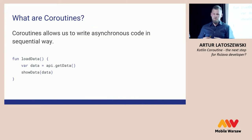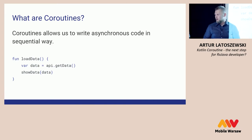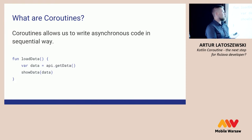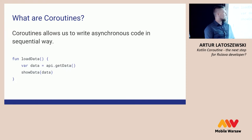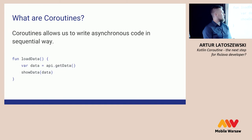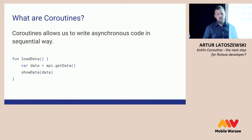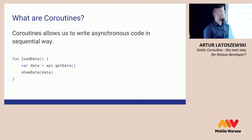Let's start by saying what coroutines are. Coroutines allow us to write asynchronous code in a sequential way — sequential, meaning just simple code like you write everywhere. This code looks very close to how it would look with coroutines. If the API call "getdata" were a network call, we would get an exception, but with coroutines it would work.